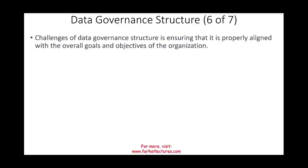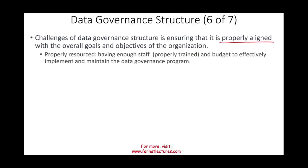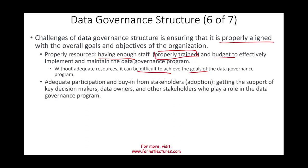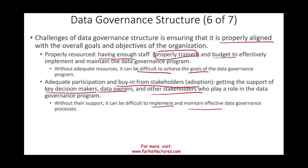Data governance structure means ensuring that data governance is properly aligned with the overall goals and objectives of the organization. This requires assigning proper resources — enough trained staff and an adequate budget — to effectively implement and maintain the data governance program. Without adequate resources, it's very difficult to achieve the goals. You also need buy-in from management and key stakeholders, including data owners, who play a role in data governance. Without their support, it's very difficult to implement and maintain effective data governance processes.